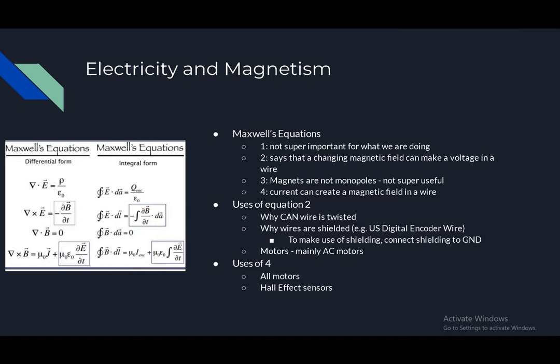Electricity and magnetism — Maxwell's equations. The first is not very important. The second states that a changing magnetic field can induce a voltage in a wire. The third is that magnets are not monopoles, but not super useful. The fourth is that current can create a magnetic field in a wire. Equation two explains why wires are twisted and why wires are shielded, and why motors are mainly AC motors. Equation four underlies all motors and also Hall effect sensors.